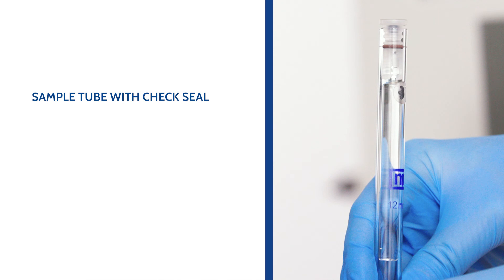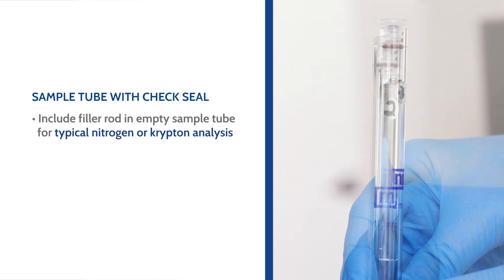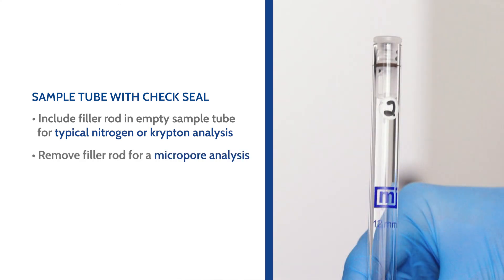For an air-sensitive sample, a check seal is used instead of a rubber stopper. When using a check seal, ensure to include the filler rod for a typical nitrogen or krypton analysis, and ensure to remove the filler rod for a micropore analysis.